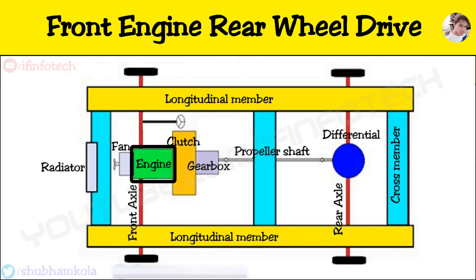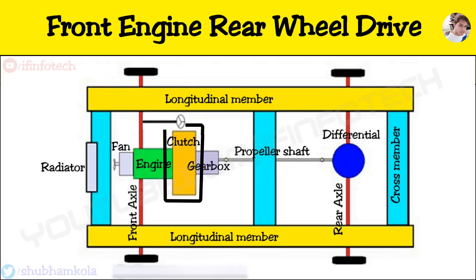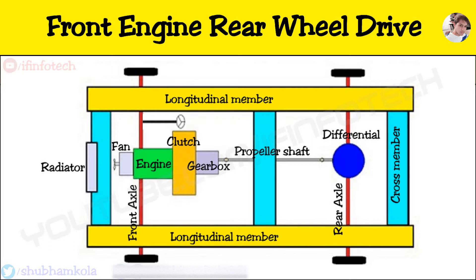In this layout, the first element is the engine. Motive power is developed in the engine and this power is transmitted to the gearbox input shaft through the clutch. The function of the gearbox is to obtain various fixed torque ratios according to speed requirement. The function of the clutch is to connect or disconnect engine power transmitted to the gearbox input shaft. The next element is the propeller shaft, whose function is to transmit torque from the gearbox shaft to the final drive, which is given to the rear axle.